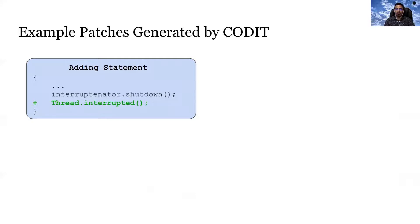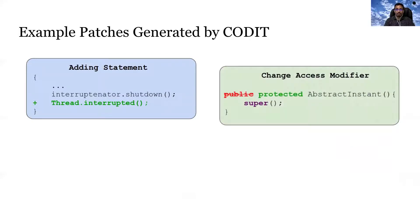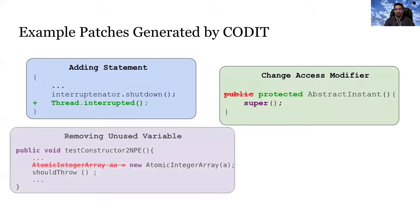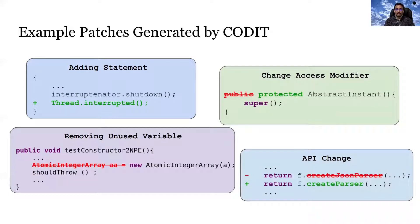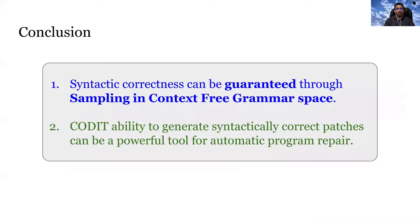Now let us look at some of the examples that CODIT successfully edited. CODIT can add statements. It can add or change the access control modifier of a small function. In case of deletion type edits, CODIT is particularly useful since while deleting a fragment of code, deleting just one or two tokens may not be enough. A certain portion of the code may have to be deleted to maintain syntactic correctness. And CODIT has shown immense promise in learning API change edits as well. So in conclusion, the takeaway points from this work are: syntactic correctness can be guaranteed through sampling in the context-free grammar space, and CODIT's ability to generate syntactically correct patches can be a very powerful tool for automatic program repair. I thank you for listening to my talk and I will be very happy to answer any questions you may have.